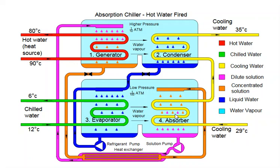In the absorber, cooling water from the cooling tower enters at 29 degrees centigrade. The water vapors arrive in gaseous form, and the concentrated lithium bromide solution coming from the generator is dropped here. The lithium bromide absorbs the water content, and we again obtain a dilute lithium bromide solution, which is pumped back to the generator to complete the cycle.